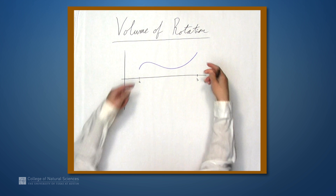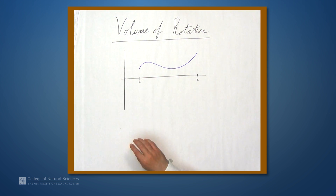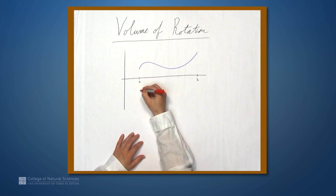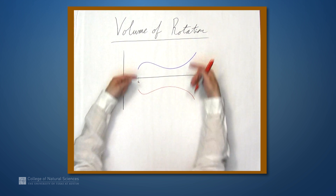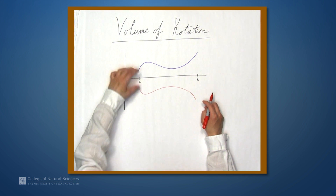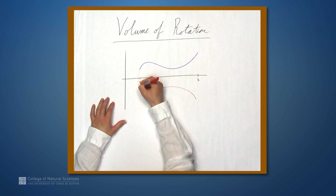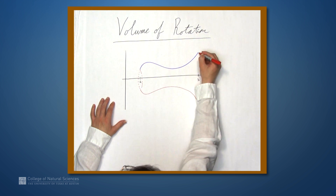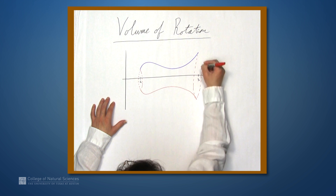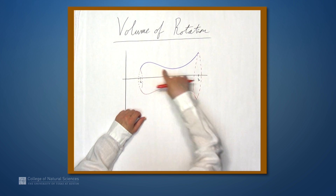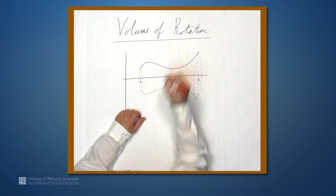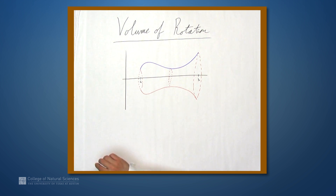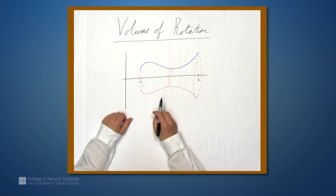and we're going to rotate it around the x-axis. Let me try to draw a mirror image of this function, something like that. And when we rotate, imagine creating a solid object by this. So we get this thing that we've rotated to obtain — not quite a cylinder because its side is like a curve, but it's this solid of rotation, as we could call it.